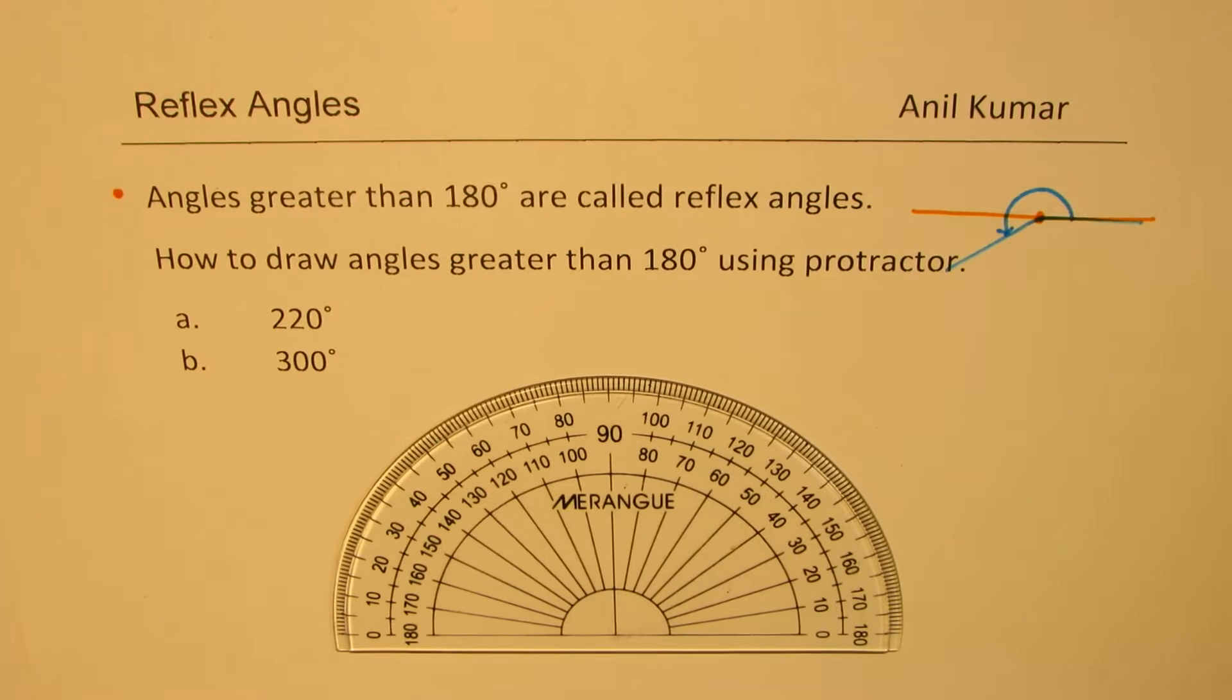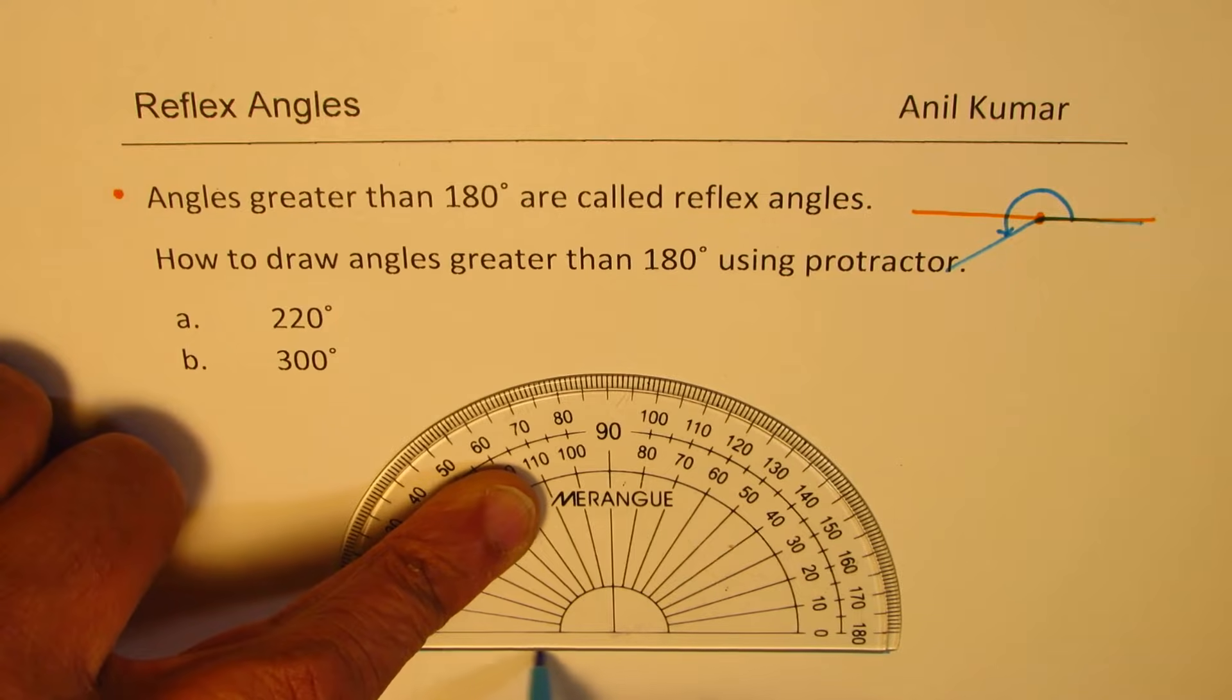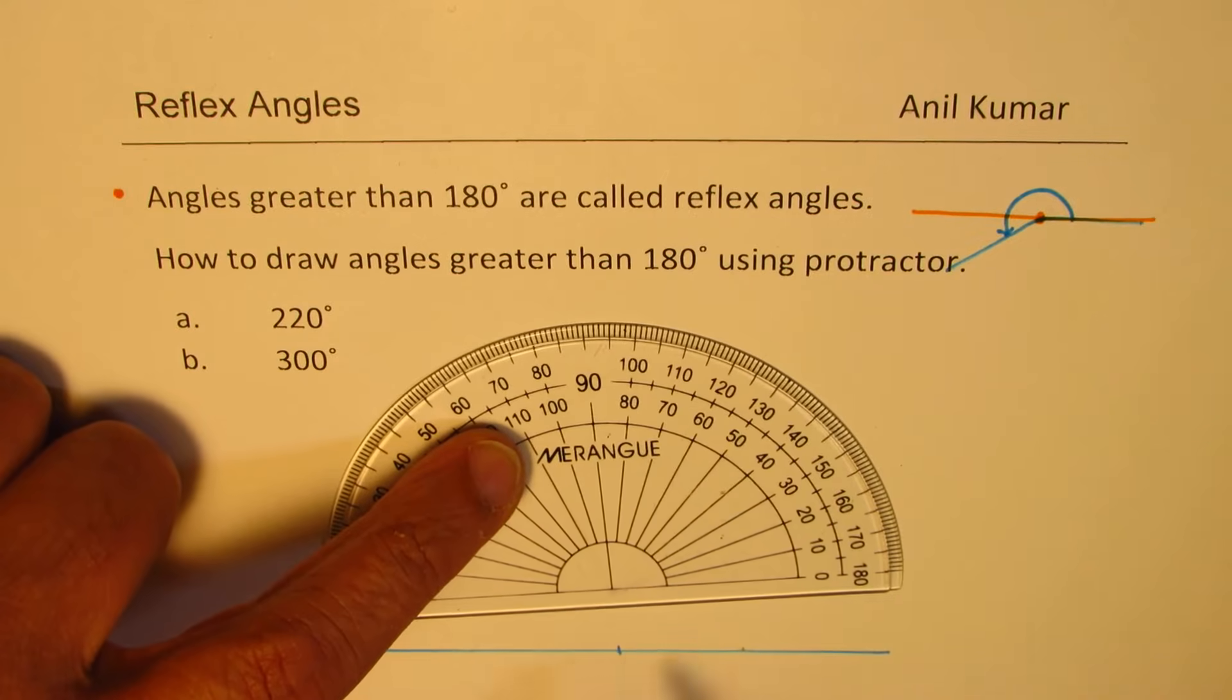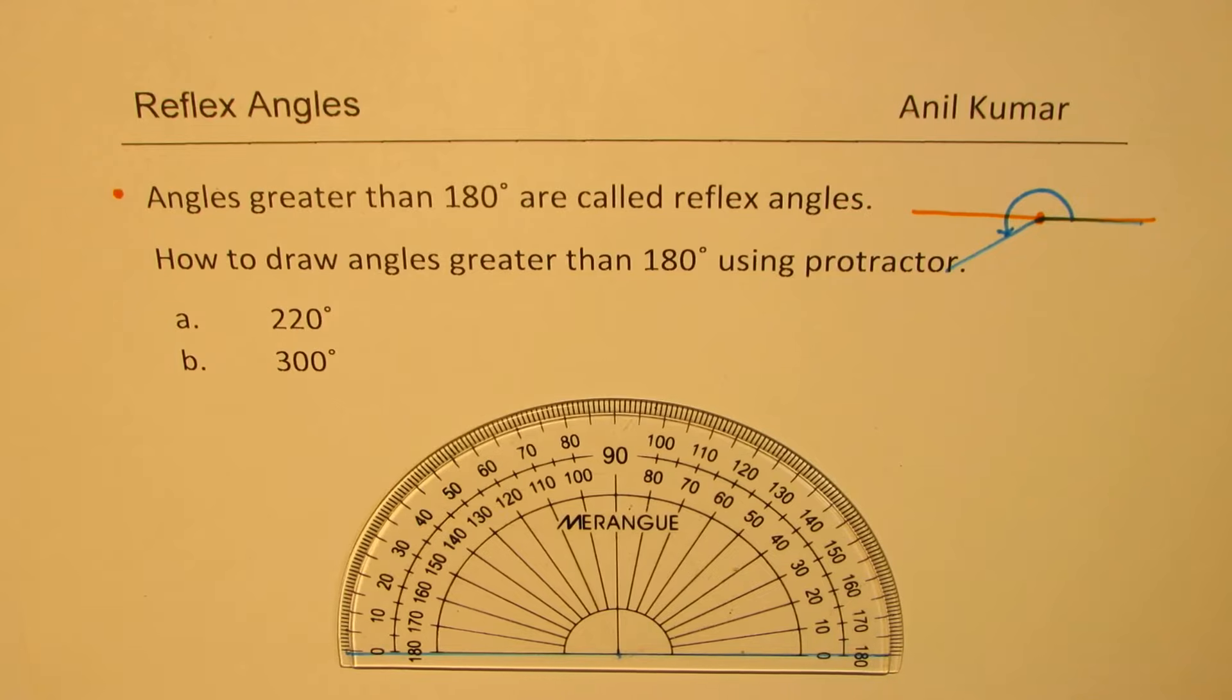So 180 degrees is a straight line. Let me just sketch a straight line here. That straight line gives you 180 degrees for any particular point.